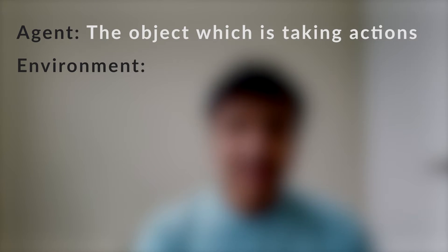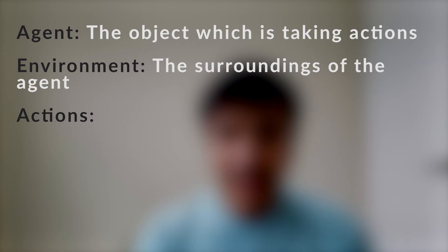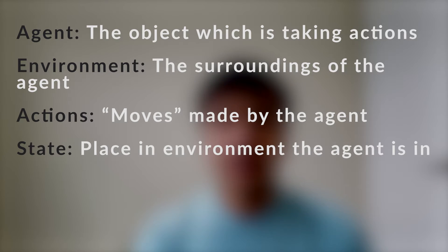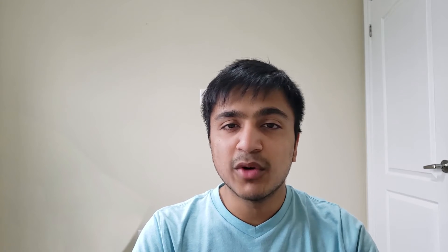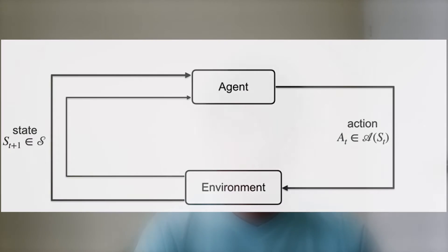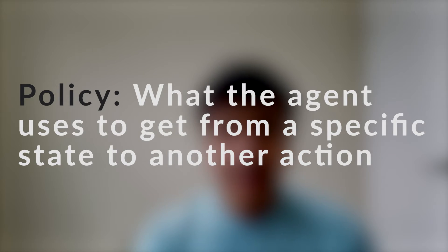First, you've got the agent, which in our analogy would be considered to be the baby. Next, you've got the environment, which would be the house in this example. The baby can then take actions, and each action will result in a new state and a certain earned reward. When you combine everything into one big process, you get something called the Markov decision process, which is just a cycle of constantly taking actions and receiving a new state and reward. Adding on just one more term, you've got the policy, which is how the agent decides to go from a state to taking a specific action.